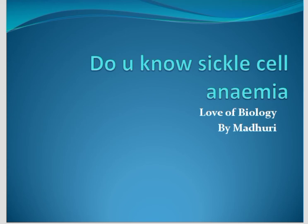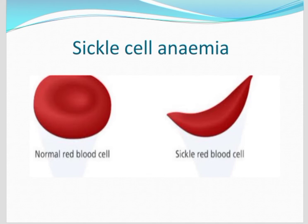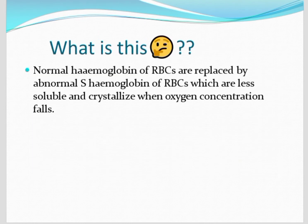Now let us see sickle cell anemia. What is this? Actually, red blood cells, which are biconcave in shape as we all know, become sickle-shaped red blood cells, which can't transport oxygen. This condition we are calling sickle cell anemia.